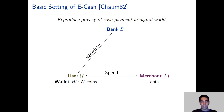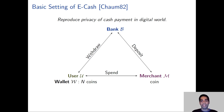Next, when the user wants to make a purchase, it engages in a spend protocol with a merchant, and at the end of this protocol, the merchant obtains a coin. Much like traditional cash payments, we require that the coin cannot be traced back to the user in an eCash system. Finally, the merchant can deposit this coin into its account by means of running a deposit protocol with the bank. At this phase, the merchant is known to the bank in order for it to make its deposit successfully.